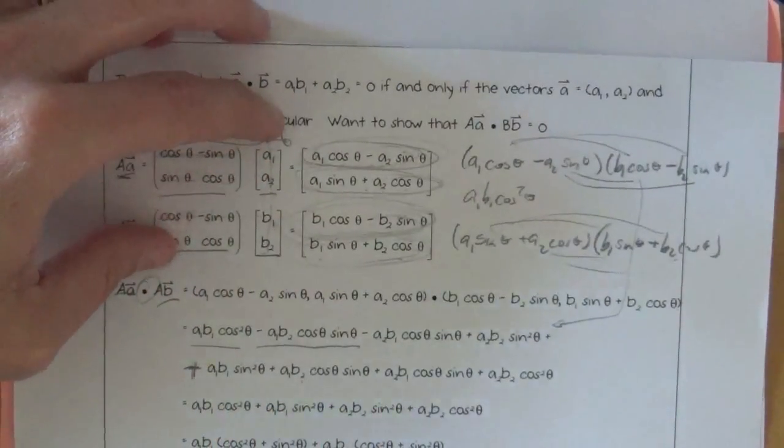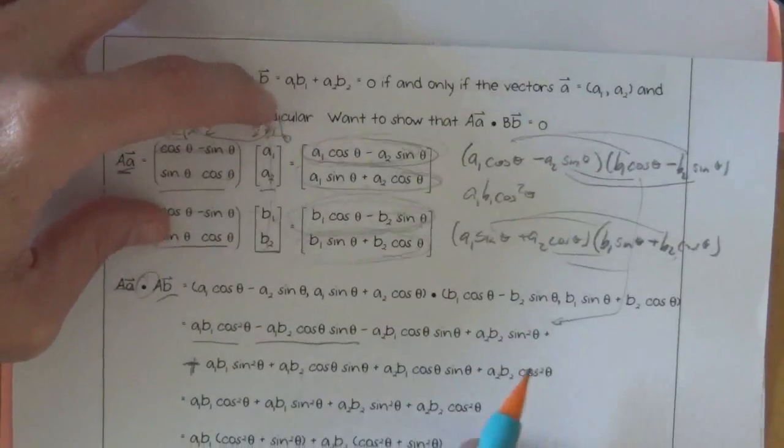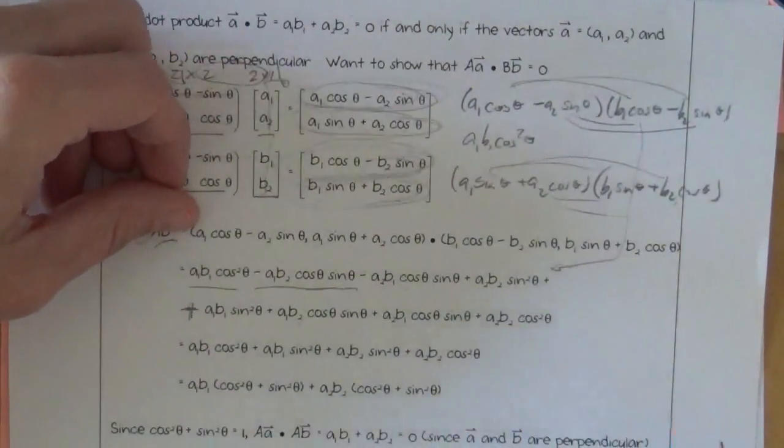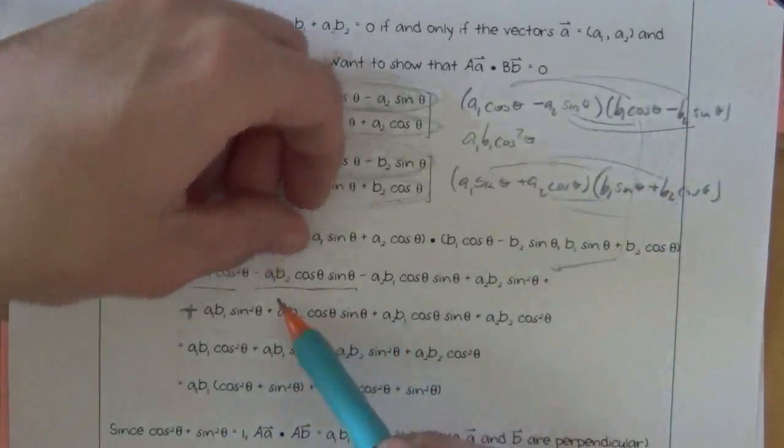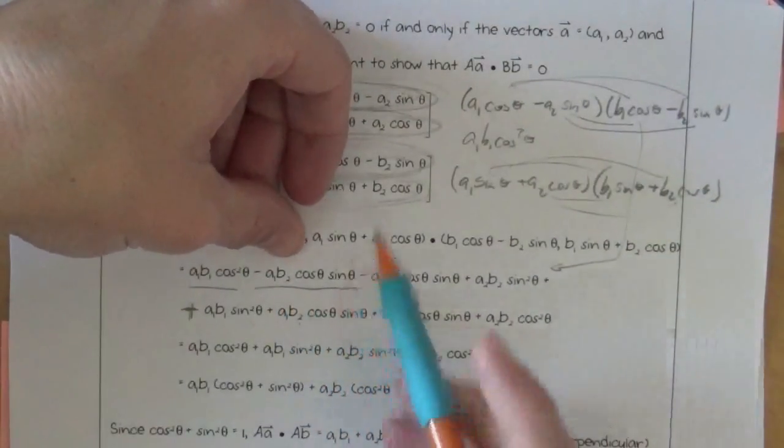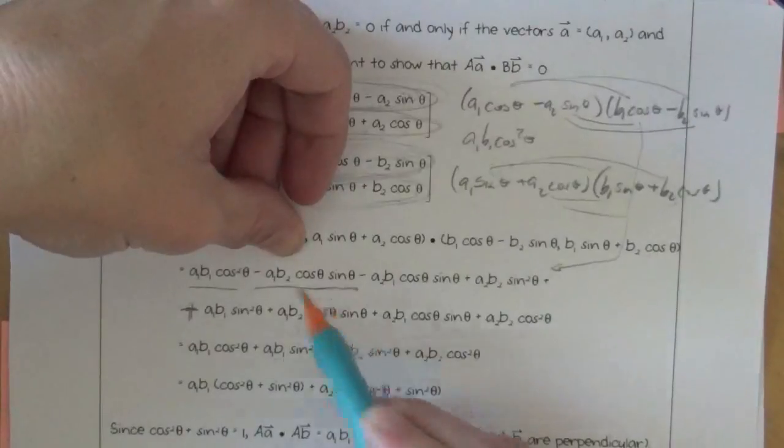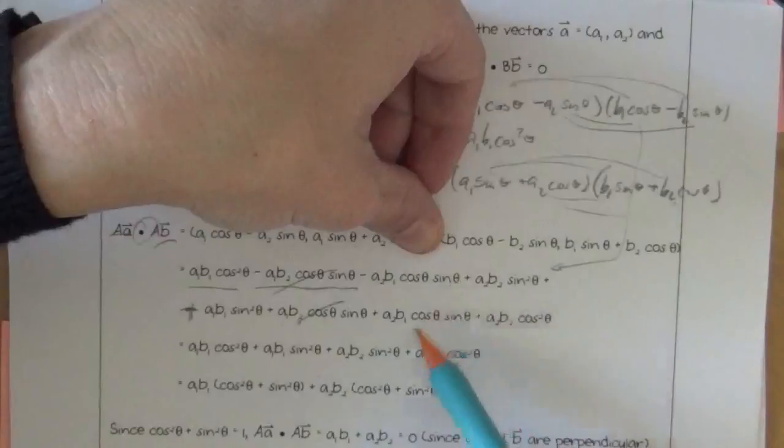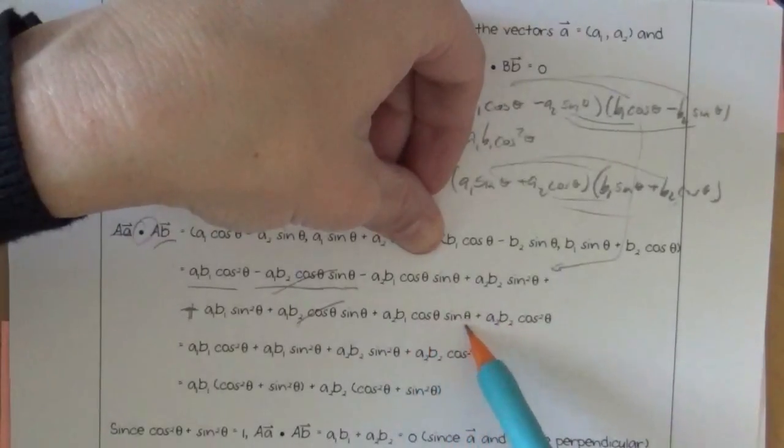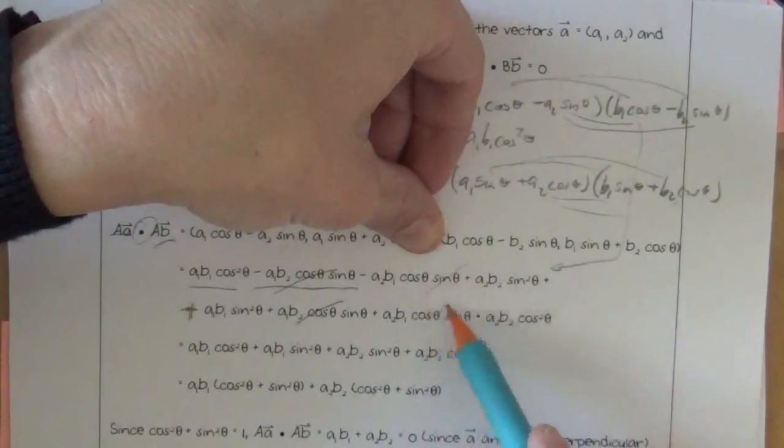And so now when you do this, you can collect a bunch of like terms. Or a lot of things actually go away, right? A1 B2 cosine theta sine theta, A1 B2 cosine theta sine theta, this one's minus, this one's plus, they go away. A2 B1 cosine sine, A2 B1 cosine sine, this one's negative, this one's plus, they go away.